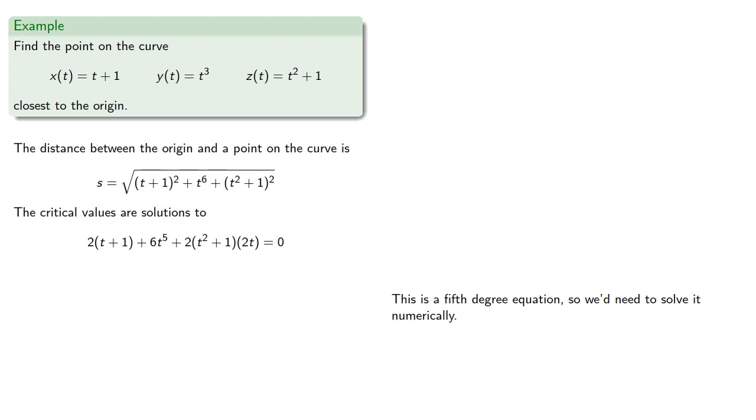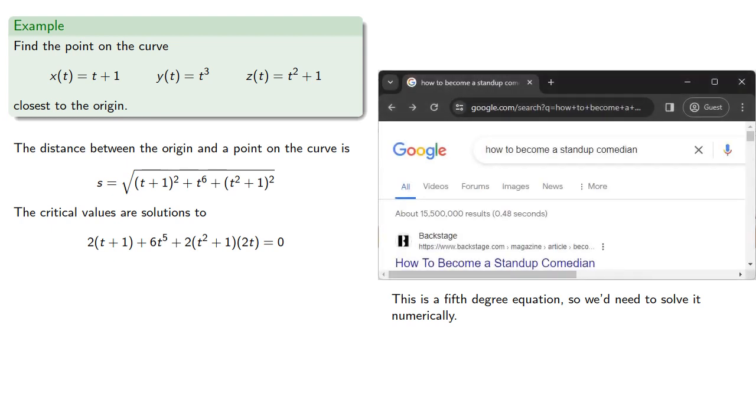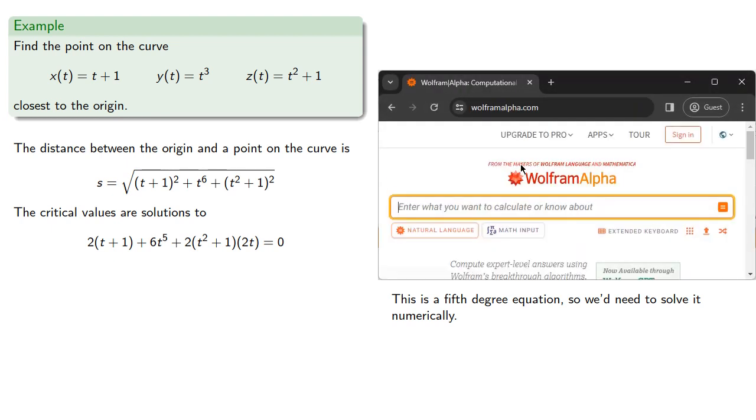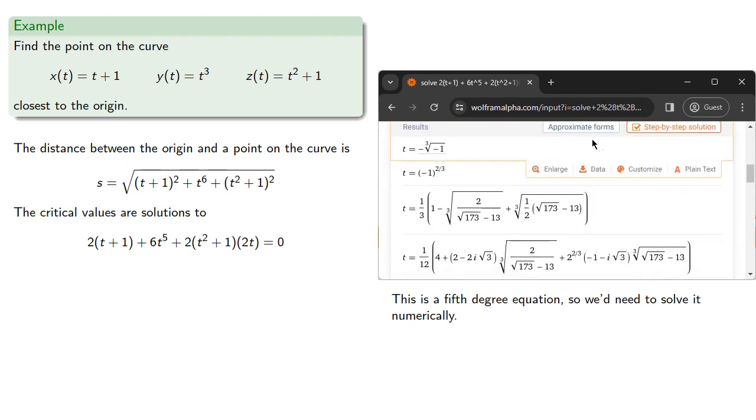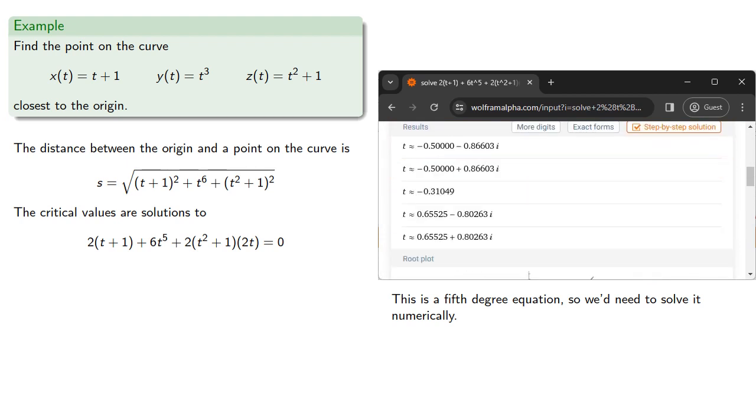Since this is a fifth degree equation, we need to solve it numerically. So we could use a tool like Wolfram Alpha. And it turns out the only real solution is t ≈ -0.31049.